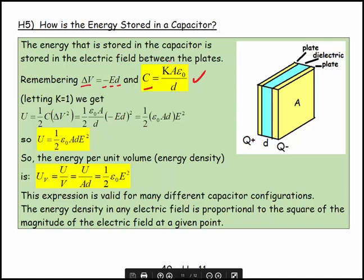If I let k equals one, why not, make it as simple as possible, then we get that the energy equals one half the capacitance times the potential difference squared, which equals - we got that from the previous section - which equals one half epsilon naught A over d times minus Ed squared, so this is a half epsilon naught A times d times electric field squared.